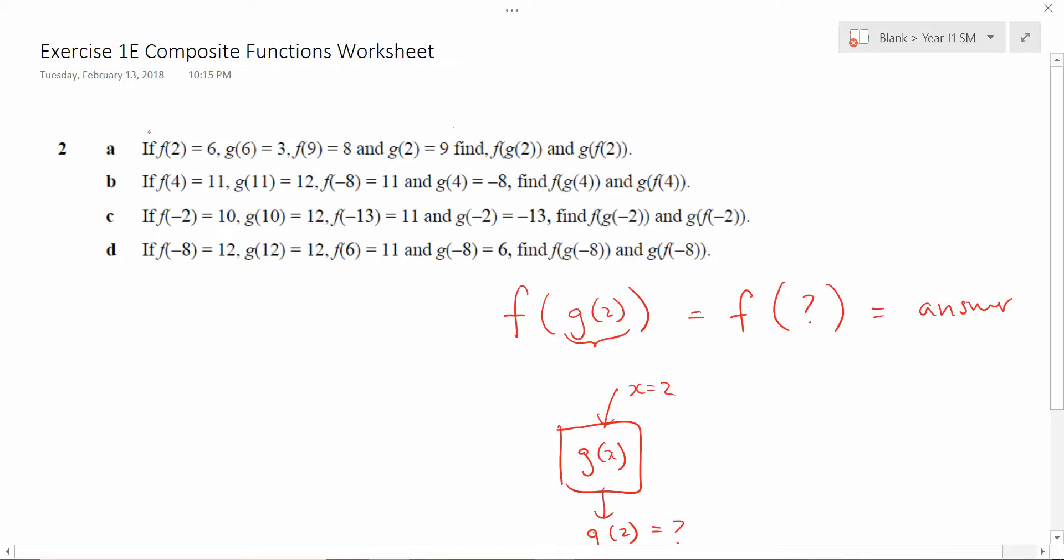So here they're saying, if you have the machine f of x, if I substitute x equals two into it, I should get out the value of six, which is really f of two equals six. Whereas in the other part, they tell you that if you have a g of x function and you substitute x equals six into it, what it should spit out is g of six, which they tell you is equal to three.